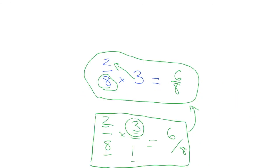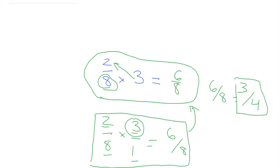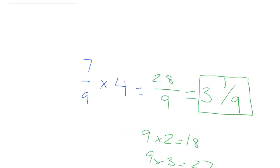We also need to simplify the earlier answer six-eighths. We can divide by two: six divided by two equals three, and eight divided by two equals four — so three-fourths, and we cannot simplify further. Our answer is three-fourths simplified. And then for the second problem, the answer is three and one-ninth.